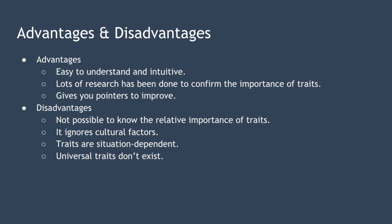In terms of disadvantages, it's not possible to know the relative importance of the different traits. Also, trait theory ignores cultural factors — what makes a great leader in the US can be very different to what makes a great leader in China, for example. Traits are also situation dependent, so a religious leader needs different traits to a business leader. Finally, the different trait studies do not agree on a core set of universal traits common to all great leaders, which makes trait theory almost impossible to use as a practical tool.